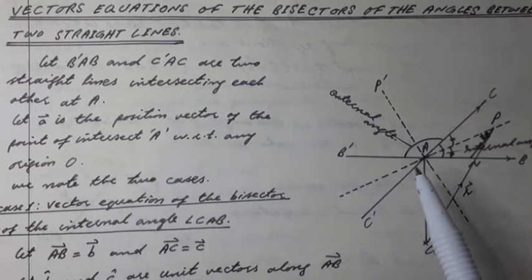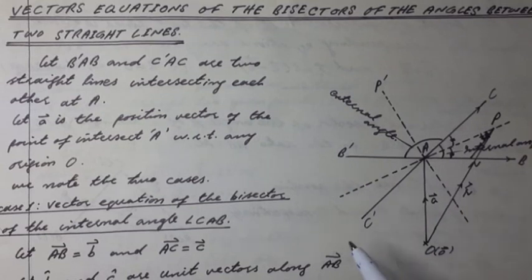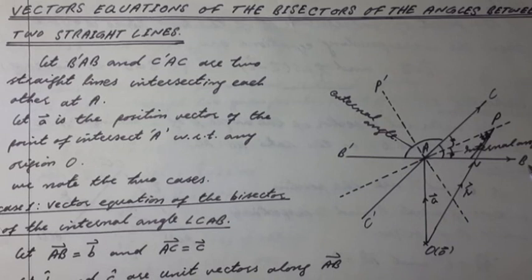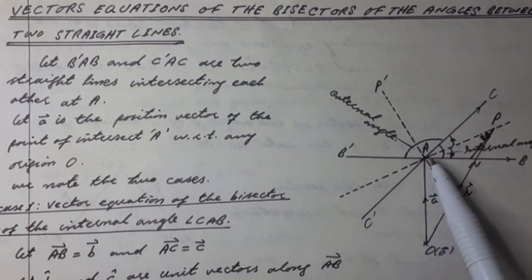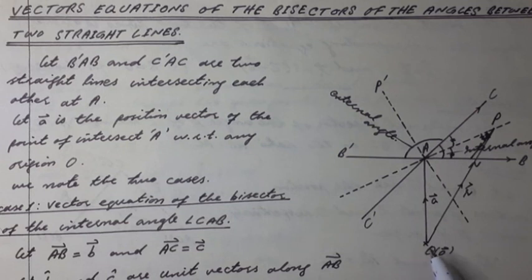Let B'AB and C'AC be two straight lines intersecting each other at point A. Let A vector be the position vector of the point of intersection A with respect to any origin O, as shown in figure. We note two cases.